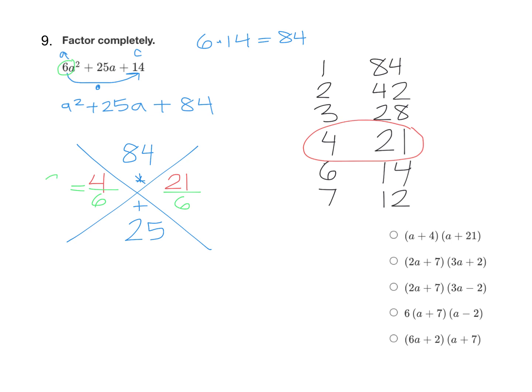4 over 6 reduces to 2 over 3. If we do 4 divided by 2, that's 2. 6 divided by 2 is 3. 21 and 6 are both divisible by 3. So 21 divided by 3 is 7, and 6 divided by 3 is 2. So that fraction reduces to 7 over 2.